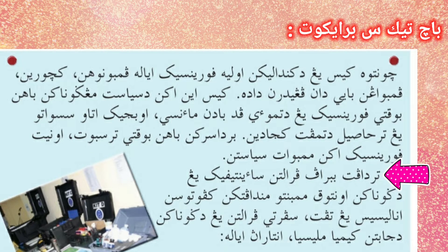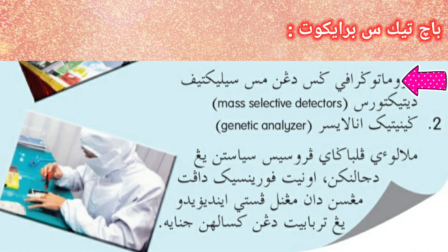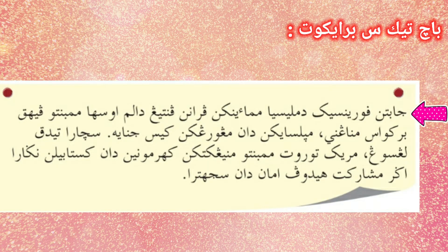Terdapat beberapa peralatan saintifik yang digunakan untuk membantu mendapatkan keputusan analisis yang tepat, seperti peralatan yang digunakan di Jabatan Kimia Malaysia, antaranya ialah Kromatografi Gas dengan Mass Selective Detector dan Genetic Analyzer. Melalui pelbagai proses siasatan yang dijalankan, unit forensik dapat mengesan dan mengenalpasti individu yang terbabit dengan kesalahan jenayah. Jabatan forensik di Malaysia memainkan peranan penting dalam usaha membantu pihak berkuasa menangani, menyelesaikan dan mengurangkan kes jenayah, sekali gus membantu meningkatkan keharmonian dan kestabilan negara agar masyarakat hidup aman dan sejahtera.